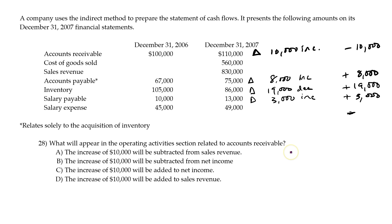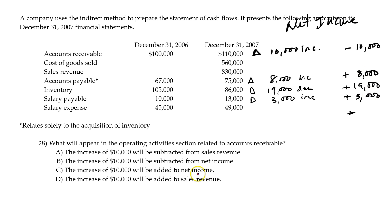So in this case, the correct answer is what would happen with operating activities. Remember, we would start with net income and then make these adjustments. The increase of $10,000 in accounts receivable would be subtracted from net income.